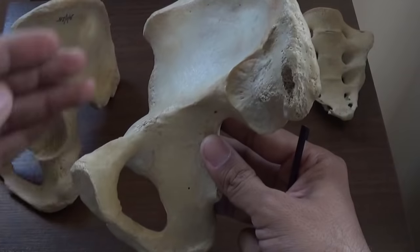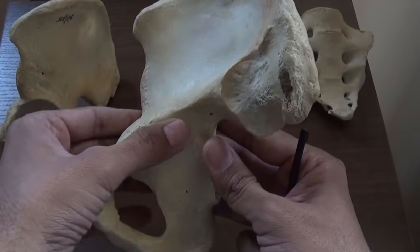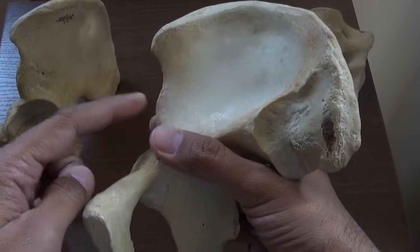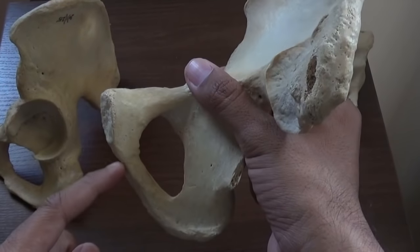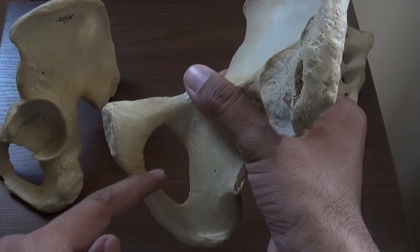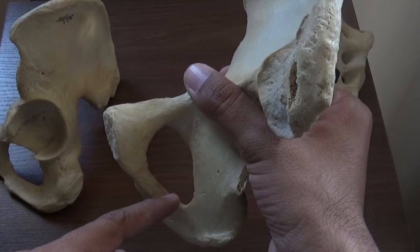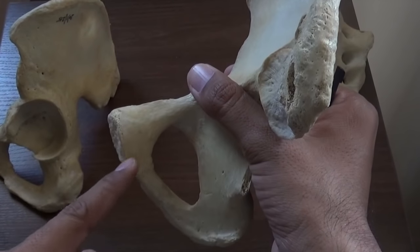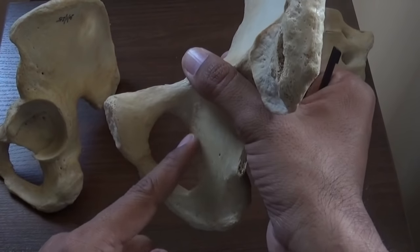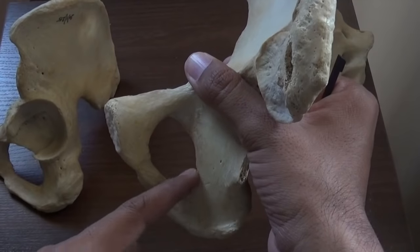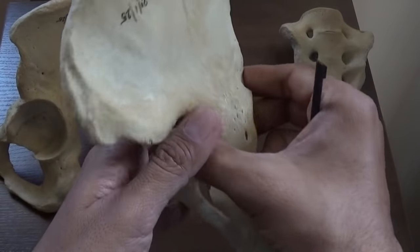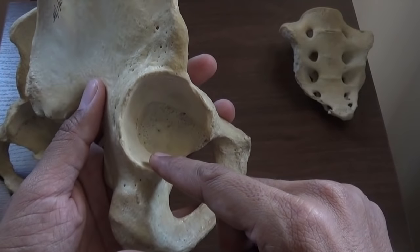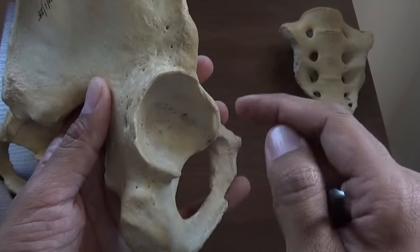The hip bone presents an upper and lower expanded part and a constricted part in the center. The upper expanded part is termed the ilium, whereas in the lower expanded part there is a triangular or oval foramen termed the obturator foramen. The part anterior to it is the pubis and the part postero-inferior to it is the ischium. On the lateral aspect there is a cup-shaped depression termed the acetabulum, which articulates with the head of the femur to form the hip joint.